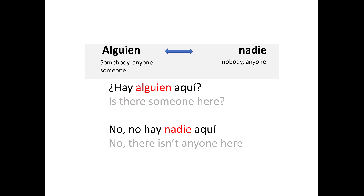Here's another set: alguien versus nadie. Alguien means somebody or anyone — someone — talking about a person. Nadie means nobody or anyone. In the question: ¿hay alguien aquí? No, no hay nadie aquí. So in the question, alguien; in the answer, nadie.